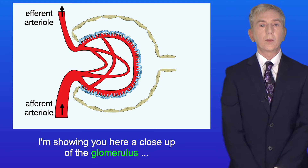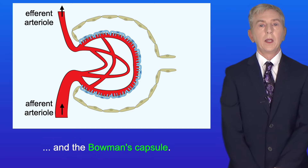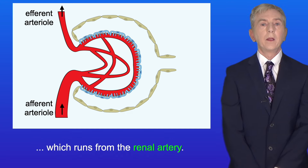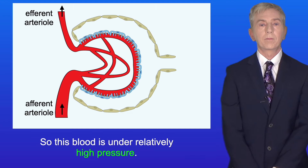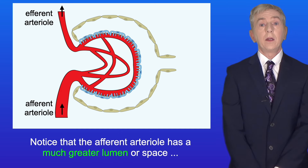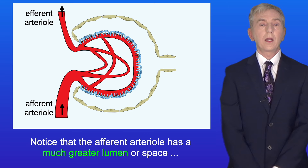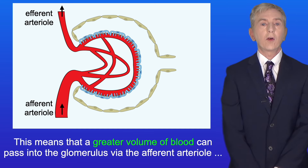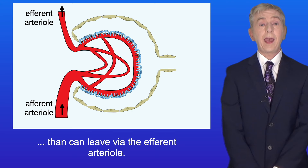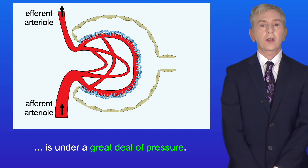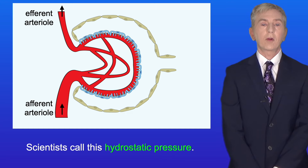Here is a close-up of the glomerulus and the Bowman's capsule. Blood enters the glomerulus via the afferent arteriole, which runs from the renal artery, so this blood is under relatively high pressure. Blood leaves the glomerulus via the efferent arteriole to the renal vein. Notice that the afferent arteriole has a much greater lumen or space than the efferent arteriole. This means a greater volume of blood can pass into the glomerulus than can leave, so the blood in the glomerulus capillaries is under a great deal of pressure. Scientists call this hydrostatic pressure.